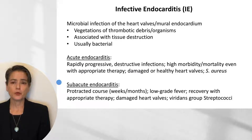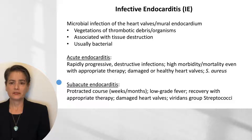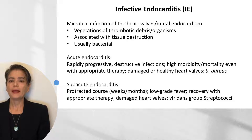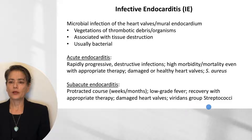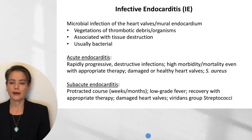By contrast, subacute endocarditis has a protracted clinical course over weeks to months with nonspecific symptoms such as a low-grade fever. Patients tend to recover with appropriate therapy. Subacute endocarditis is most common when heart valves are damaged — in the setting of congenital heart disease or degenerative changes — and the organisms most commonly implicated are viridans group streptococci.